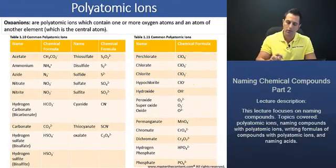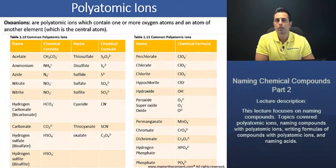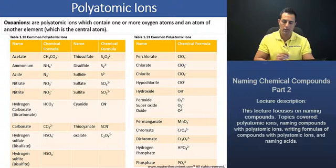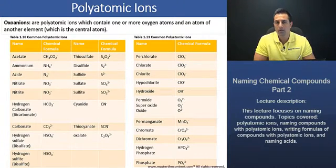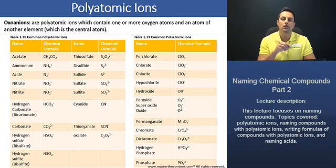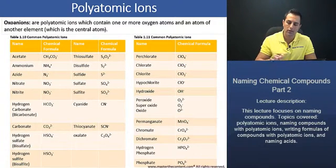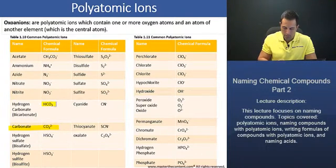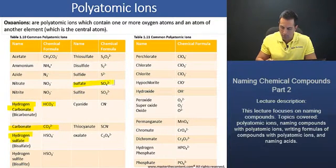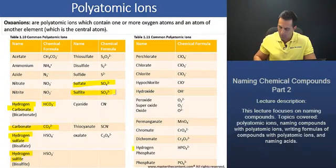Now, polyatomic ions can also be named due to the presence or absence of hydrogen. When the hydrogen is present, you would just name the hydrogen and then the ion. For example, here we see carbonate — with the presence of hydrogen, it's going to be hydrogen carbonate. The same thing applies to hydrogen sulfate and hydrogen sulfite, and similarly for hydrogen phosphate and phosphate.